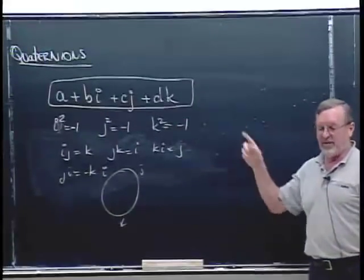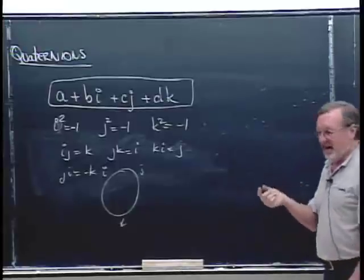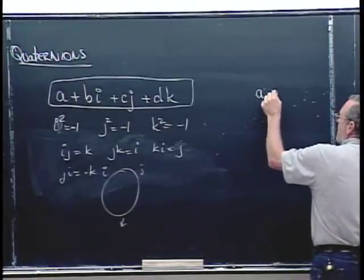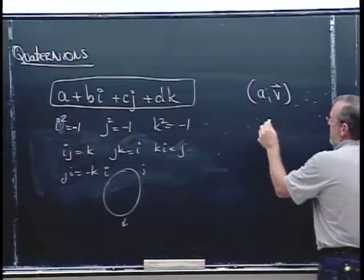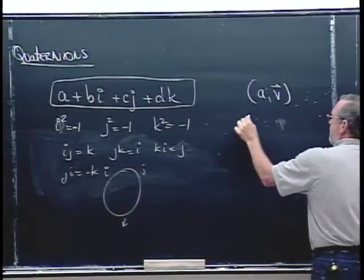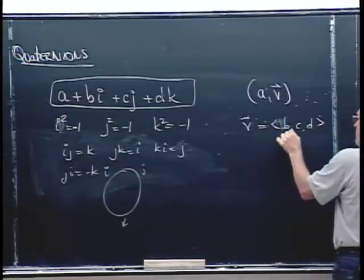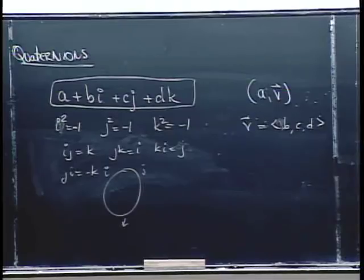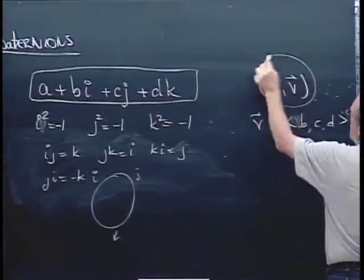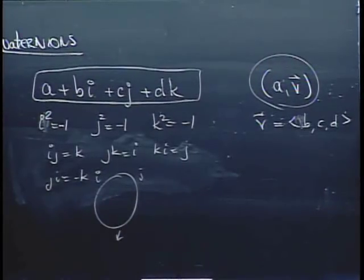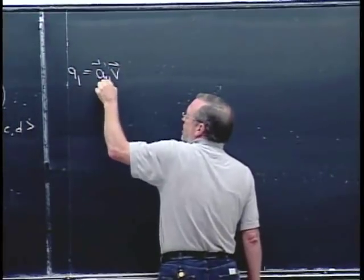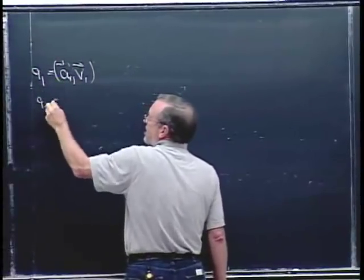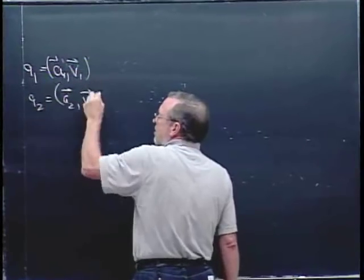But if you skew the way you look at quaternions slightly, there's a different way to write them as (A, V), where A is a scalar constant and V is the vector (B, C, D). We can call a quaternion Q = (A₁, V₁) and another Q₂ = (A₂, V₂), where V is a vector.